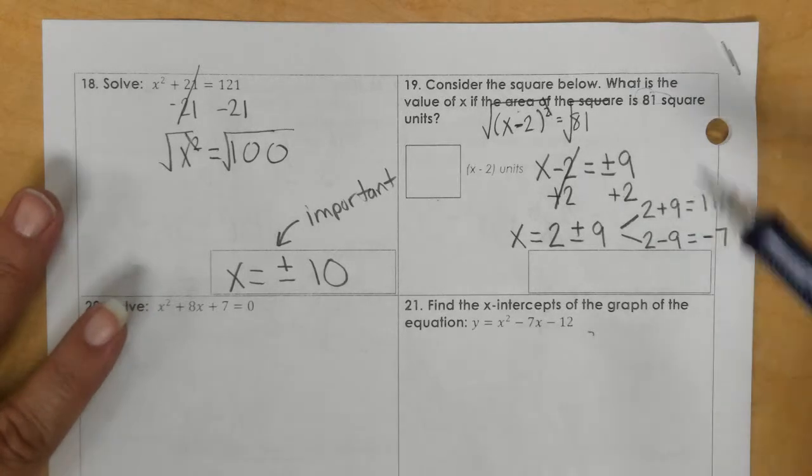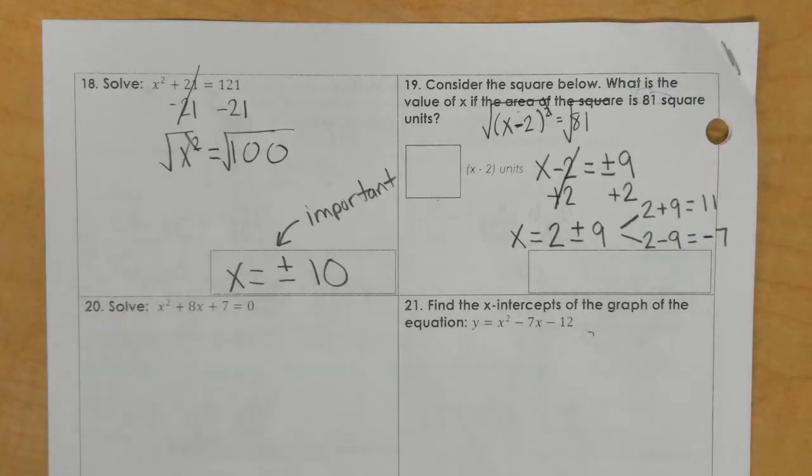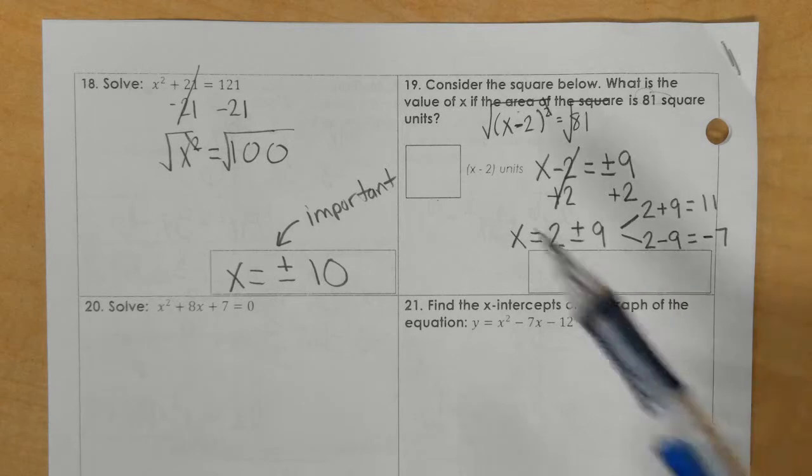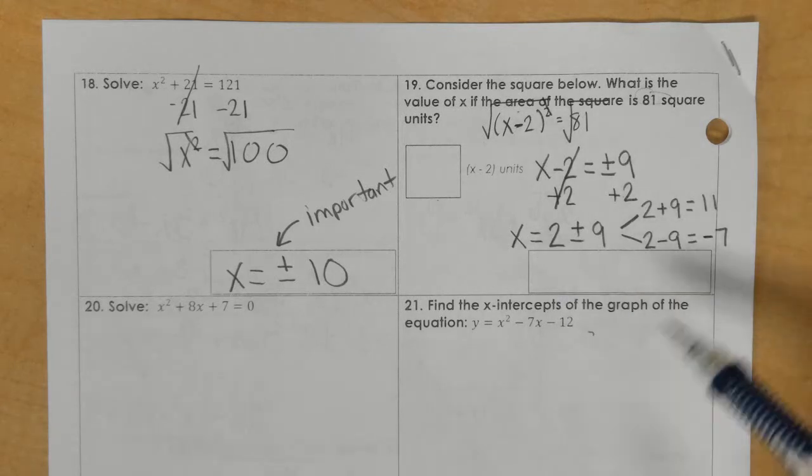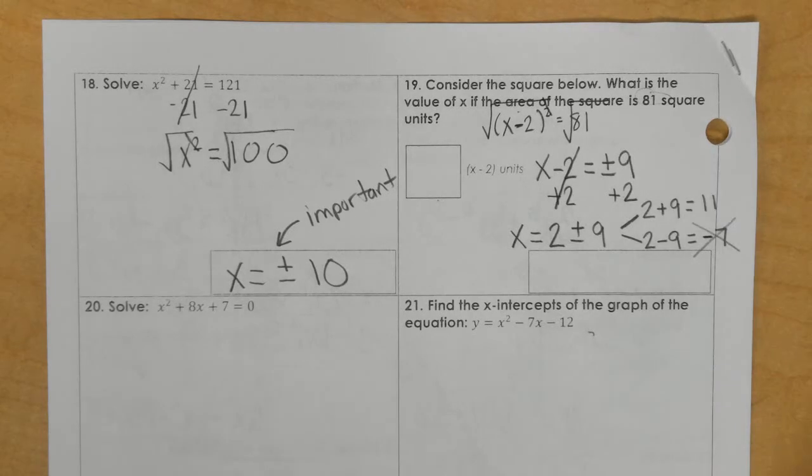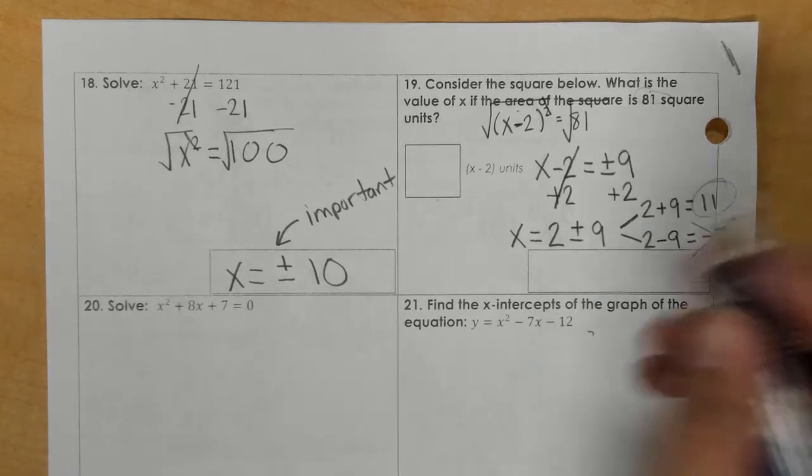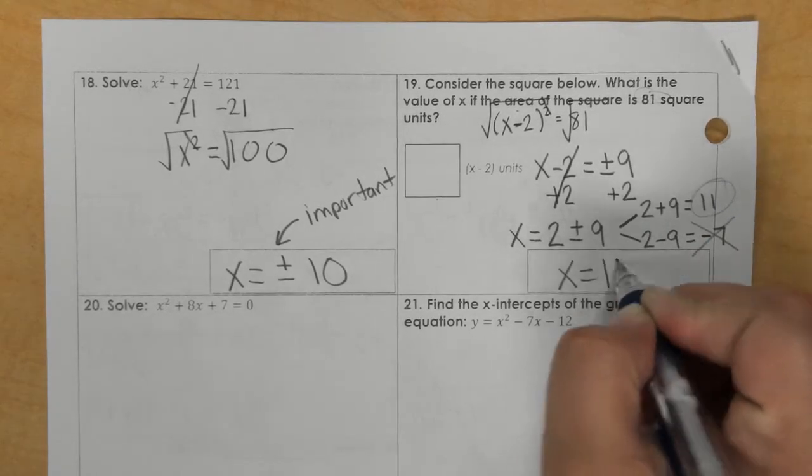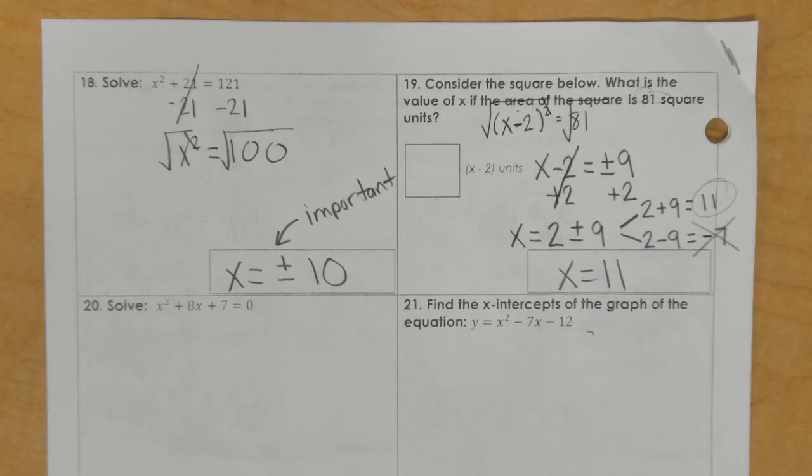And in this problem, we talked about distance, and it can't be negative. So unfortunately, we have to just cross out this negative 7 and we're going to use the positive solution. So x is 11 in this case.